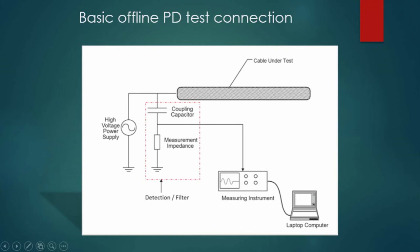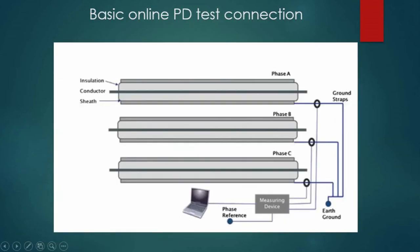In the offline PD test setup, we can see the power cable connected to a high voltage power supply — typically a high voltage test transformer — along with a coupling capacitor, measurement impedance, and a detection filter. The measurement instrument, such as an LDS-6 or similar hardware depending on company requirements, connects via laptop computer. Some companies use doubled equipment or rebranded LDIC equipment.